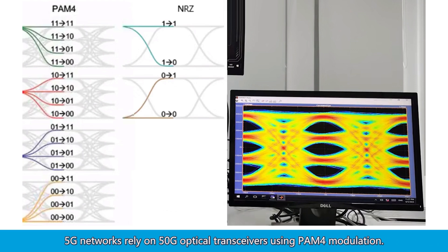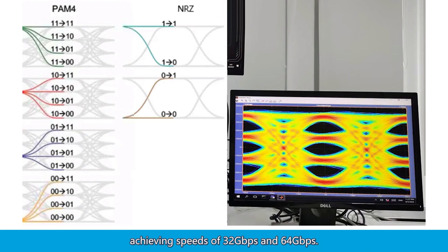5G networks rely on 50G optical transceivers using PAM-4 modulation. Future technologies like PCIe 6.0 also adopt PAM-4, achieving speeds of 32 gigabits per second and 64 gigabits per second.